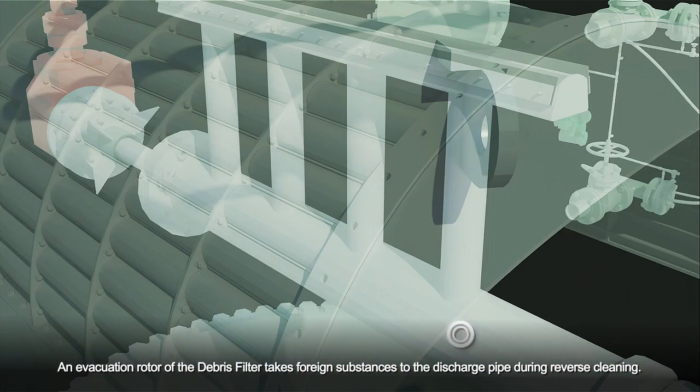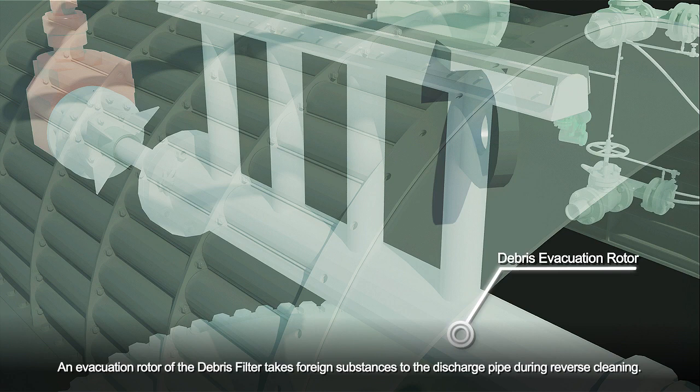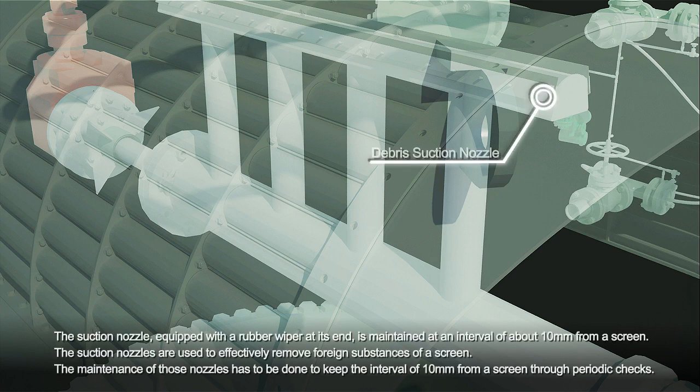An evacuation rotor of the debris filter takes foreign substances to the discharge pipe during reverse cleaning. The suction nozzle equipped with a rubber wiper at its end is maintained at an interval of about 10 millimeters from a screen. The suction nozzles are used to effectively remove foreign substances from a screen.